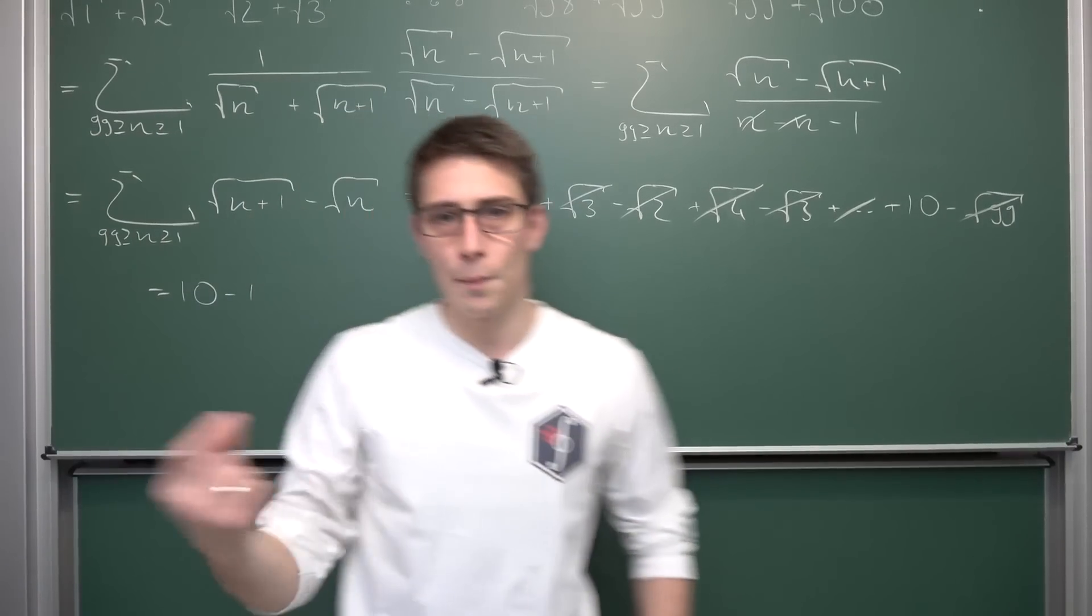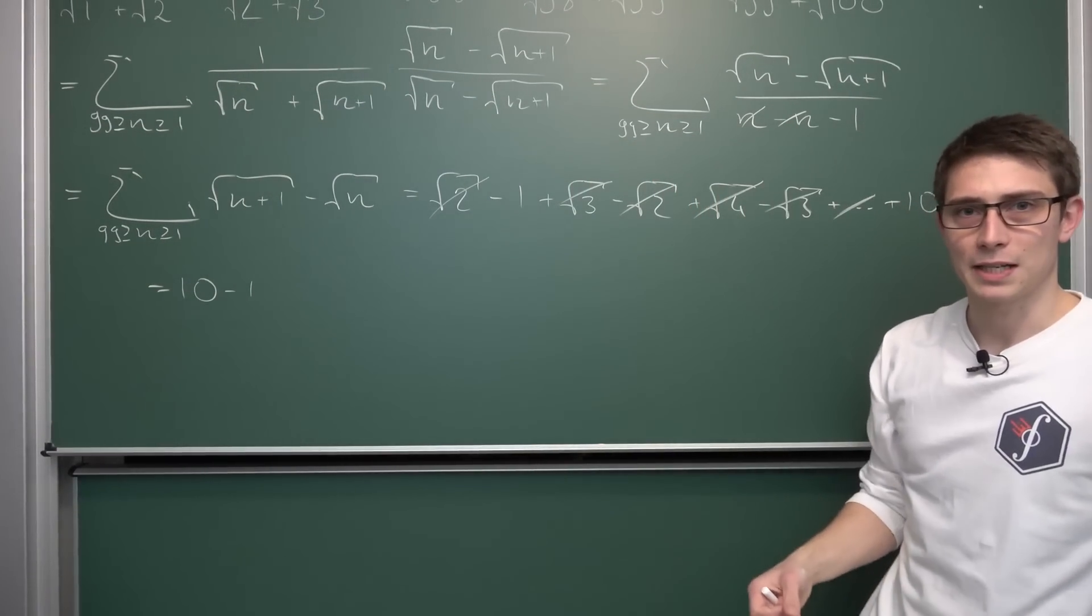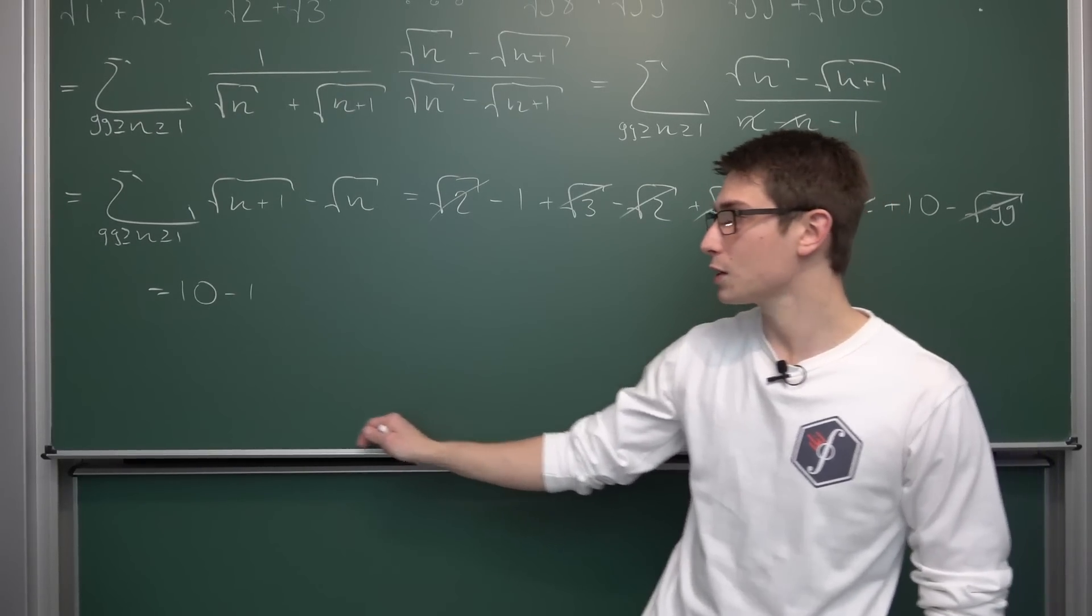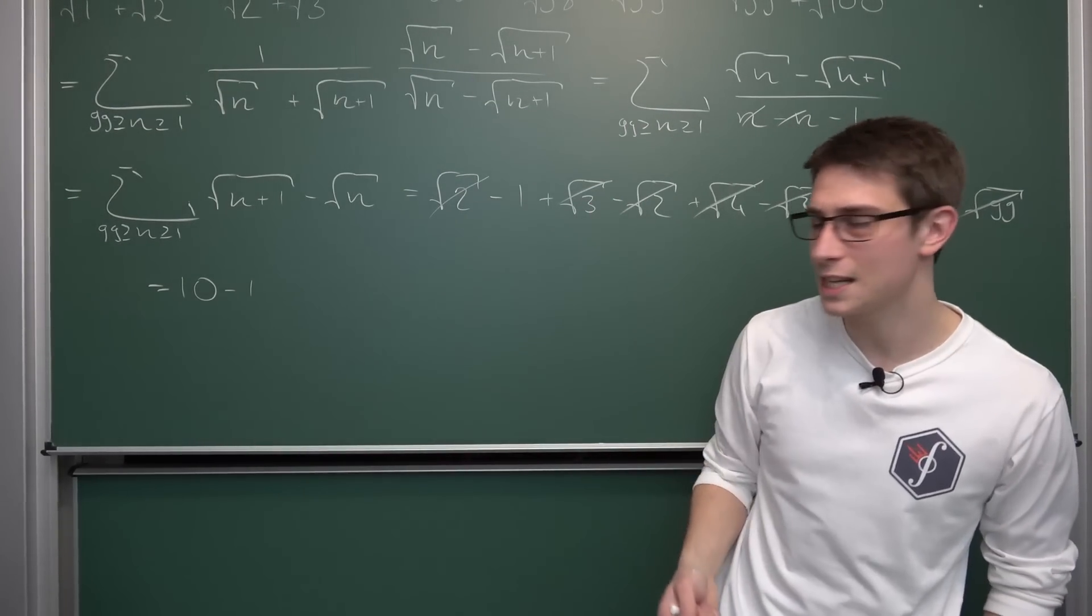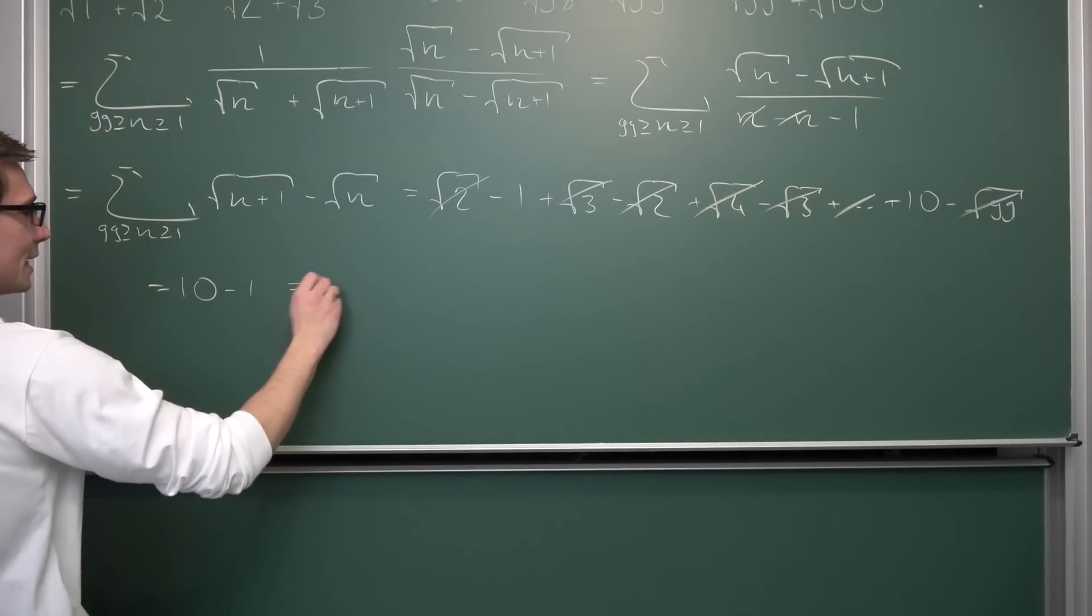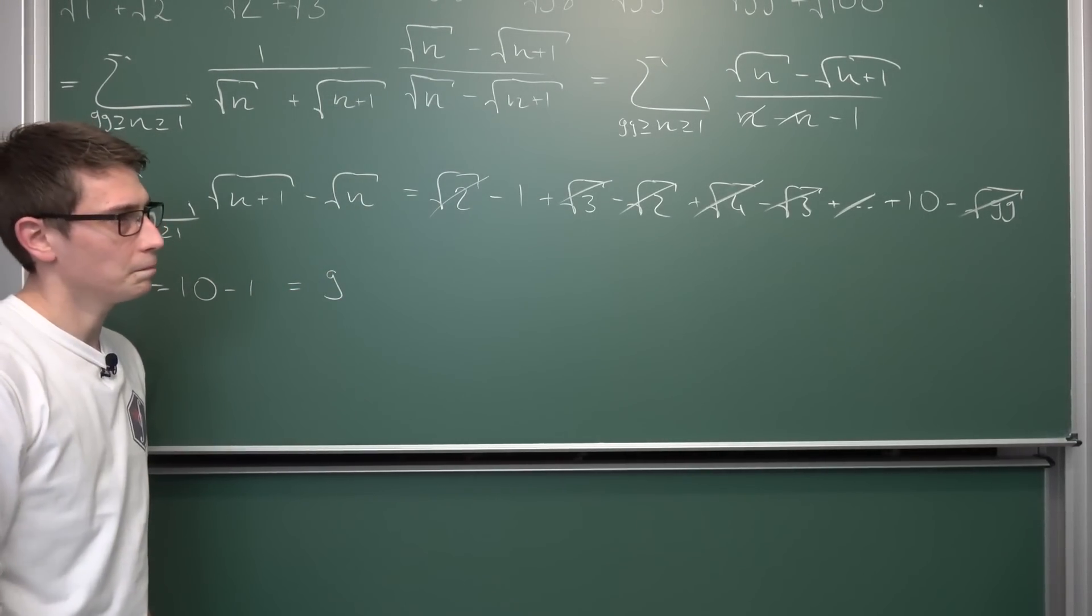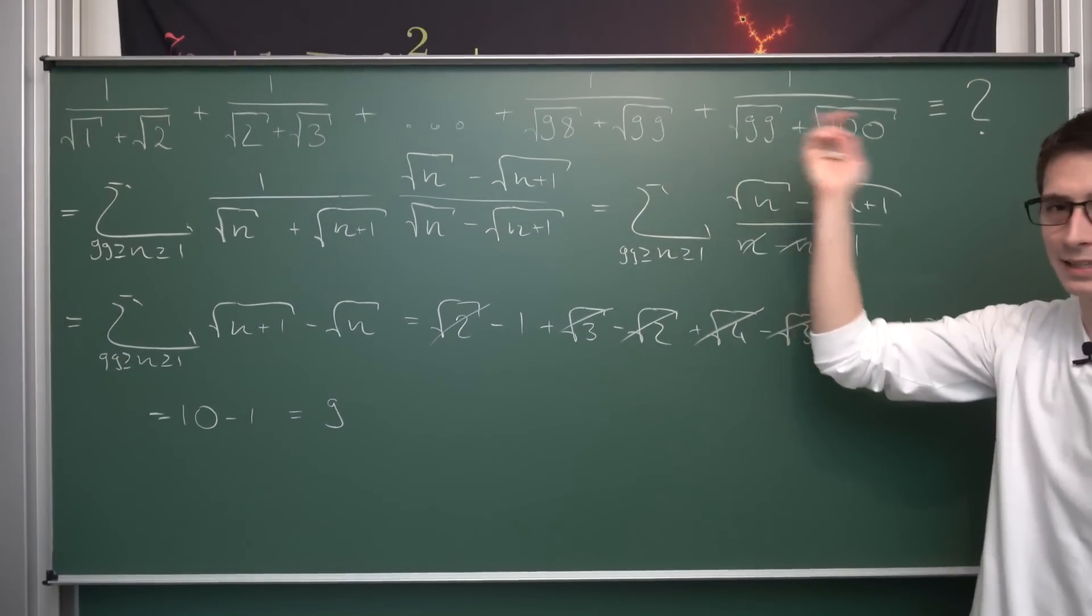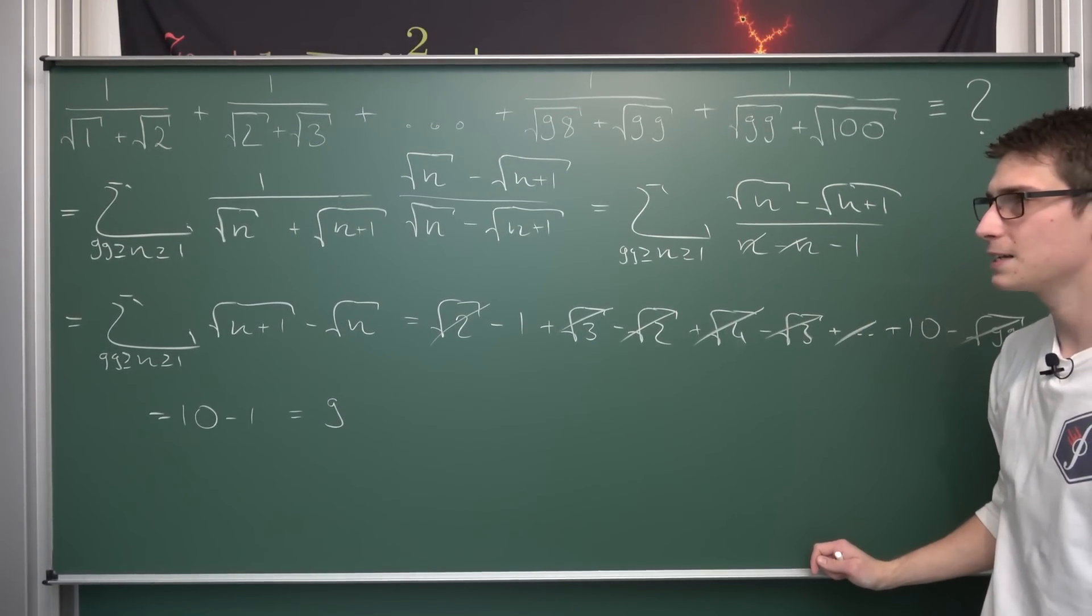And by the Peano axioms 10 minus 1 is the equivalent formulation of being the successor of 9. Or this right here is going to turn into the predecessor of 10 meaning 9 overall. Yeah, this right here is our answer. Pretty cool, right? That some square root of terms like this could collapse like this.